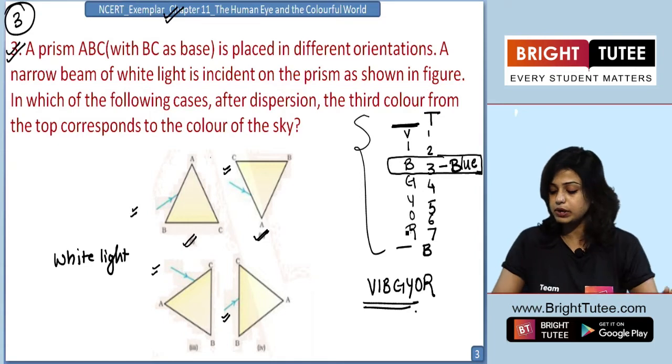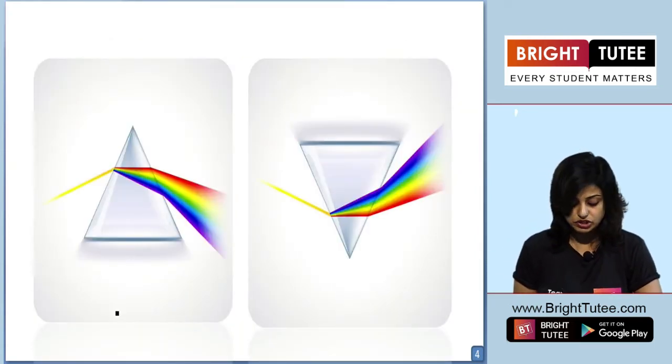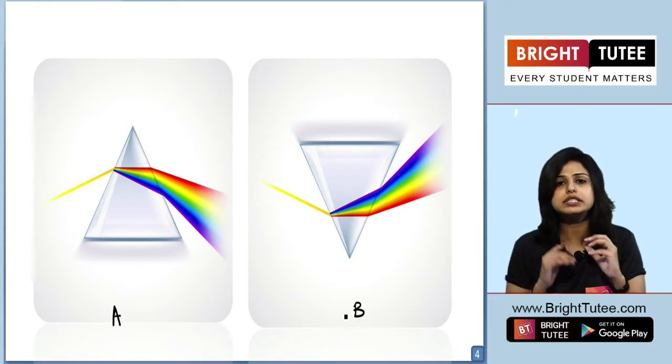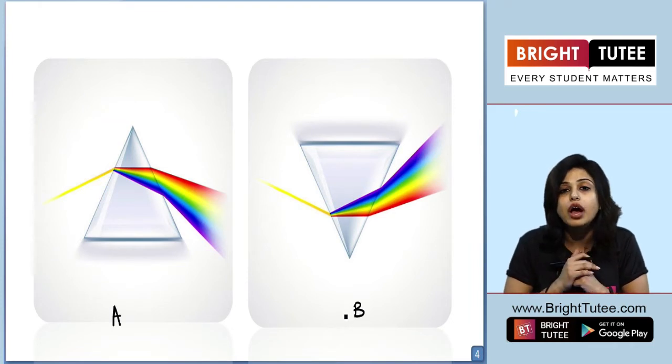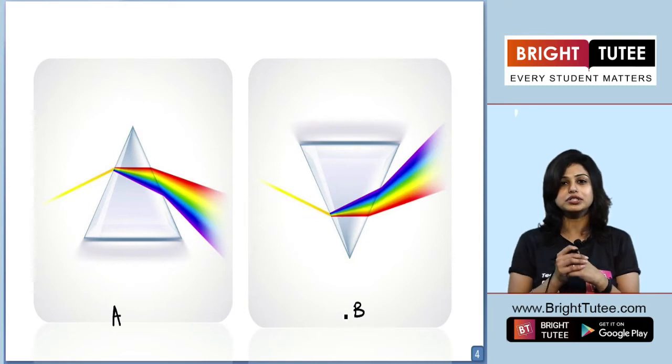I am giving you 10 seconds to think over the problem. Now to help you, I will give you an image here. Image A and image B. 10 seconds, two images. Think over the answer. Where we will get the blue color as the third color from the top. Think over it students.